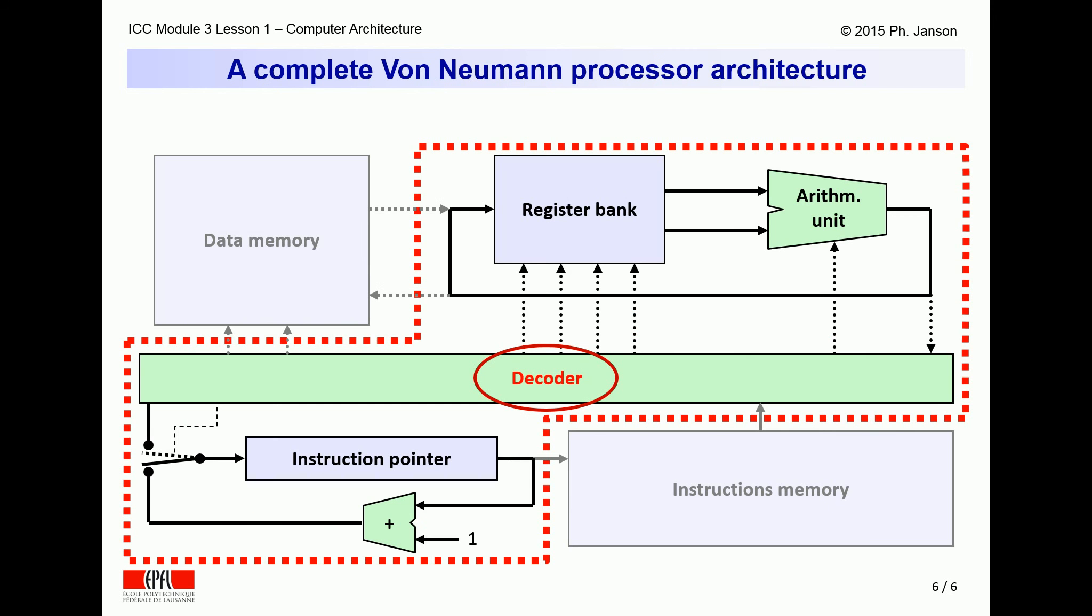Given the encoding described in this video clip, the inside of the instruction decoding block in the computer architecture becomes easy to imagine. It merely takes the bits of each instruction as it comes out of the instruction memory and distributes them to the proper target units: register bank, arithmetic unit, instruction pointer, and its associated switch.